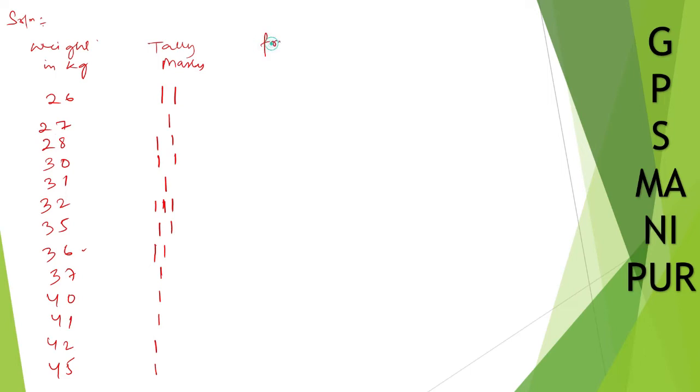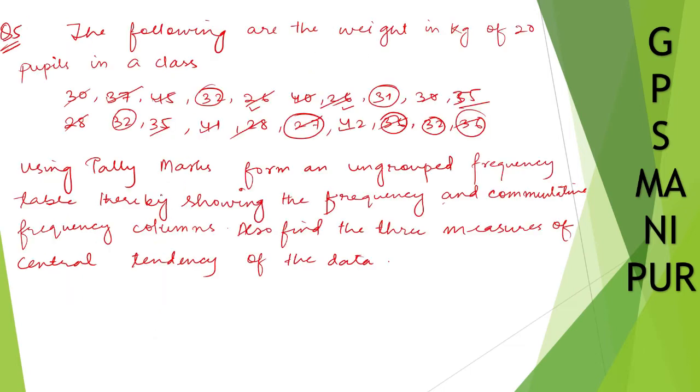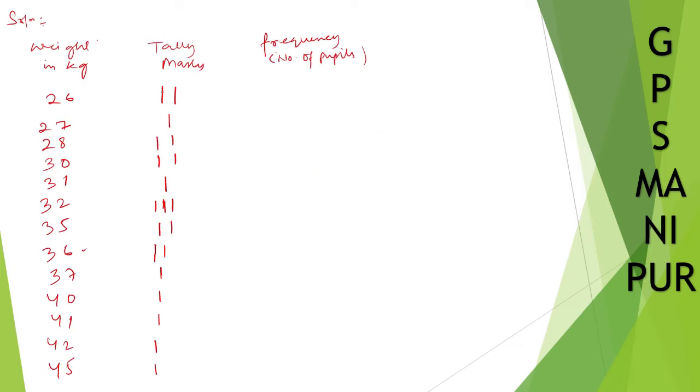So let me write down the frequency or number of pupils. The question has asked us using tally marks form an ungrouped frequency table. So let us form the frequency table. The frequencies are: 2, 1, 2, 2, 1, 3, 2, 2, 1, 1, 1, 1, 1.